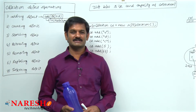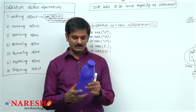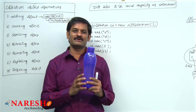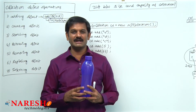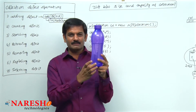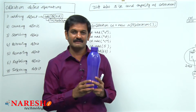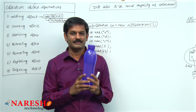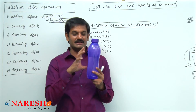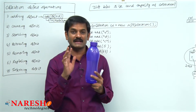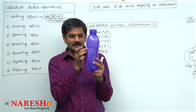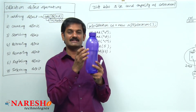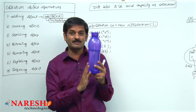Let me take a live example to understand the difference between size and capacity. Please look at this bottle. The total level of water that can be filled in this bottle is called capacity. How much water is currently available in this bottle is the size. This bottle's capacity is 1 liter — it can hold 1 liter of water. Currently half a liter of water exists in this bottle, so the size is half a liter and the capacity is 1 liter.